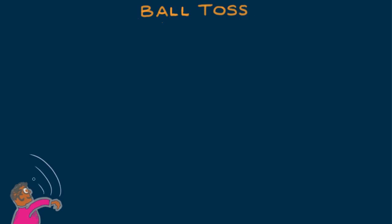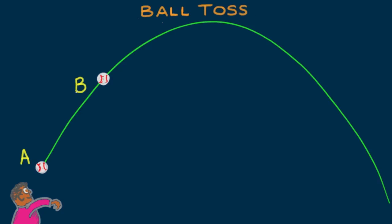Phil Physiker tosses a ball across a field. We show sample positions of the ball at five locations: A, B, C, D, and E.